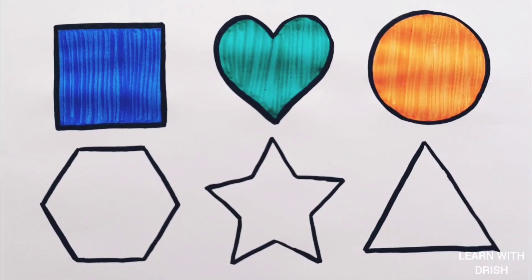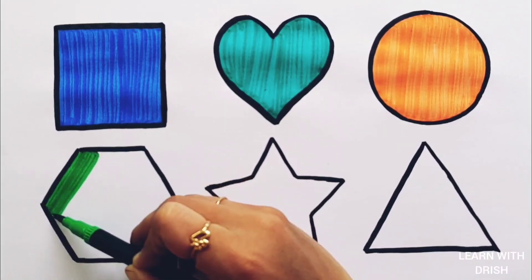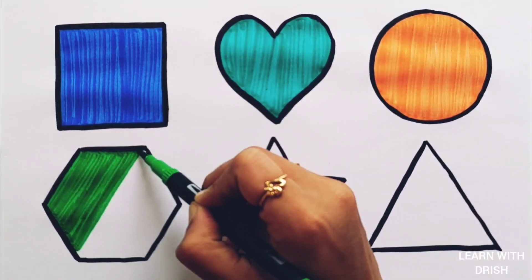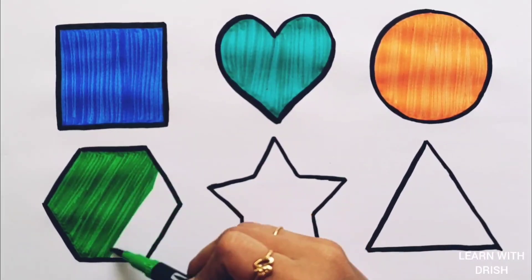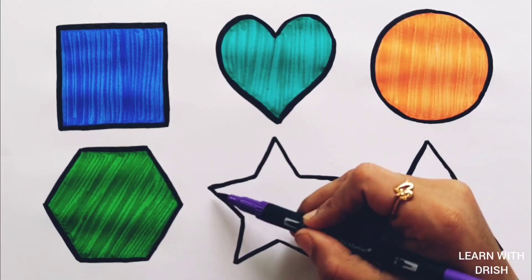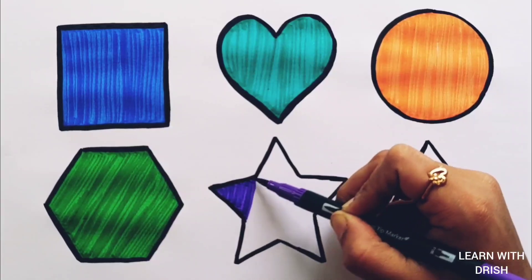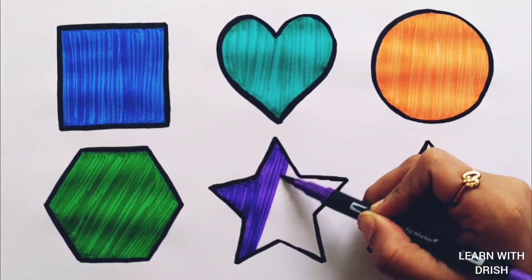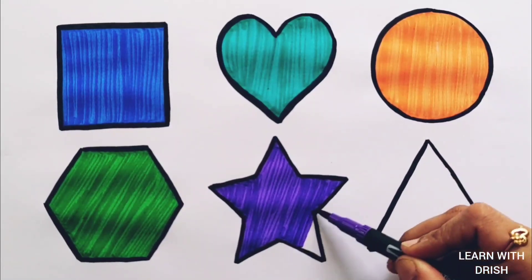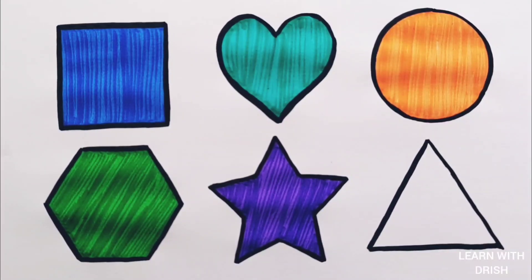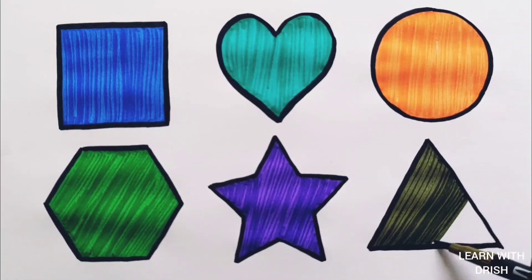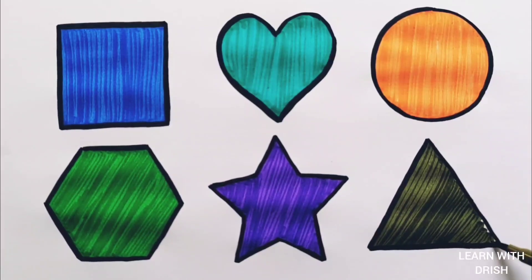Orange color — an orange circle. Green color — a green hexagon. Purple color — a purple star. Purple color and olive green — a triangle.